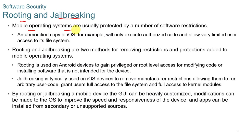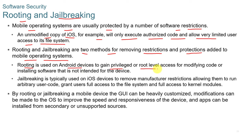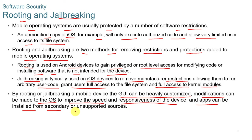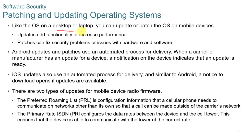Mobile operating systems are usually protected by software restrictions from the manufacturer. Rooting and jailbreaking are two methods for removing those restrictions. Rooting is used on Android devices to gain root-level access for modifying code or installing software not intended for the device. Jailbreaking is typically used on iOS devices to remove manufacturer restrictions, allowing them to run user code and grant full access to the kernel modules. By rooting or jailbreaking, the GUI can be customized, modifications can be made to improve speed and responsiveness, and apps can be installed from secondary or unsupported sources.